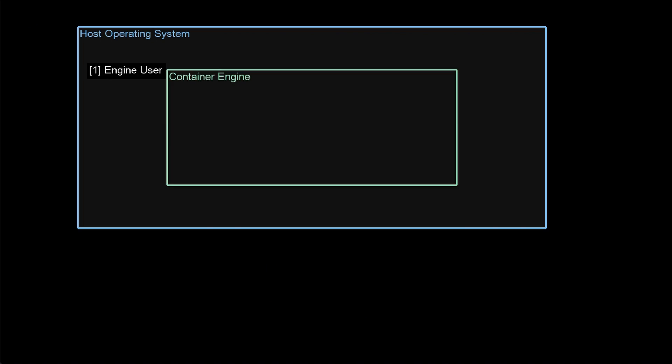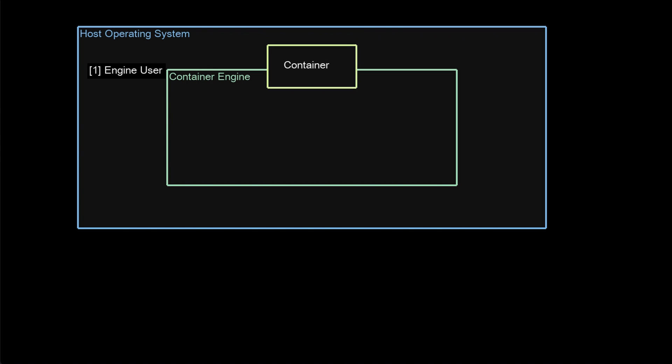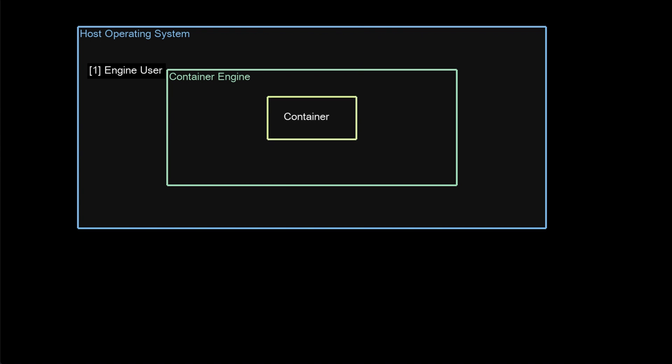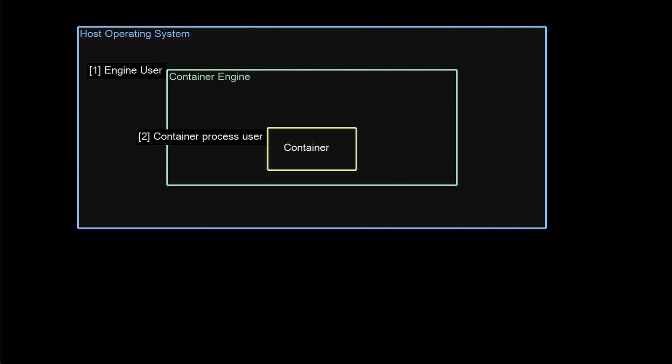There are three layers to consider. The host operating system runs the container engine as a given user. Then the container process gets run as a user within the namespace of the container. And finally, that maps back to the host operating system. This is getting complicated, but why do we care?